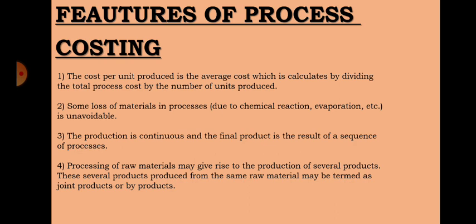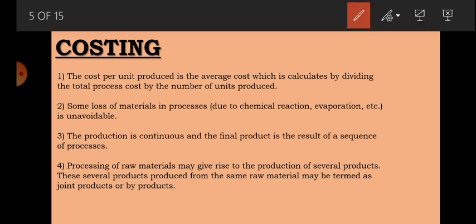Now we will discuss the features of process costing. Number one: the cost per unit produced is an average cost, calculated by dividing the total process cost by the number of units produced. For example, if our process is refining, we take the total refining cost and divide it by the number of units produced to get cost per unit.